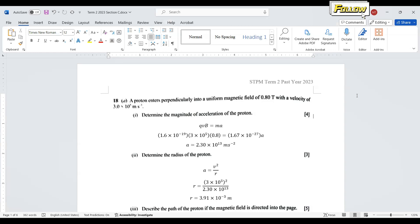Today we discuss STPM Term 2 Past Year 2023, Question 18. A proton enters perpendicularly into a uniform magnetic field of 0.8 Tesla with a velocity of 3×10⁵ meters per second.